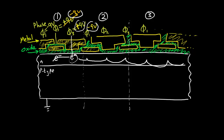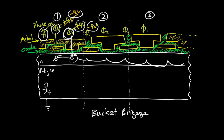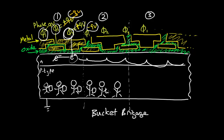An analogy that often gets drawn for the CCD is the bucket brigade analogy. You can imagine each clock phase — phase one, phase two, phase three — in each pixel being a different person with a bucket. Each pixel has three people each with a bucket, and they take turns pouring their contents into the next person's bucket until all of the water, or electrons, are collected and read out. The metal clock lines are separated from the underlying silicon by silicon dioxide, so there's no DC connection between the silicon and the metal.